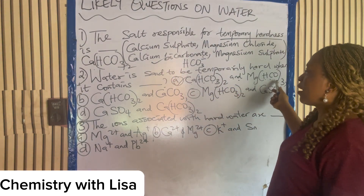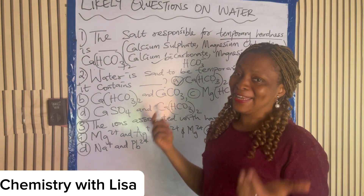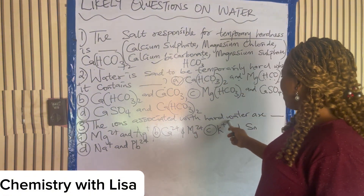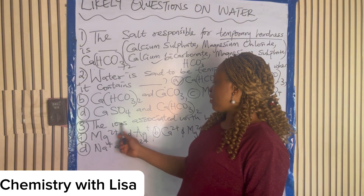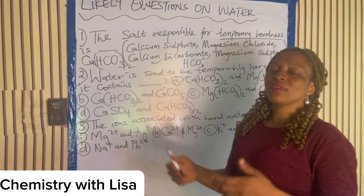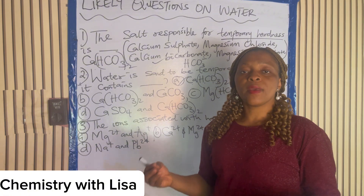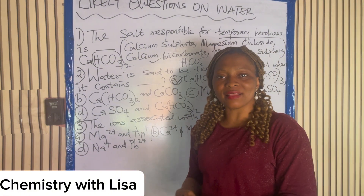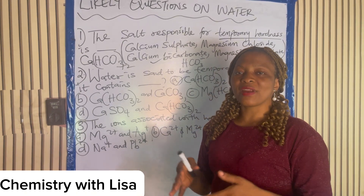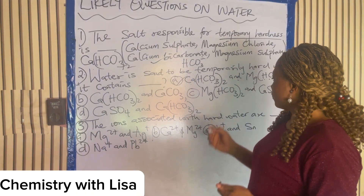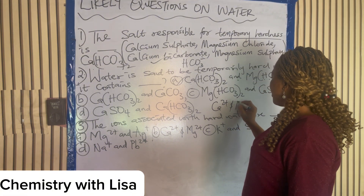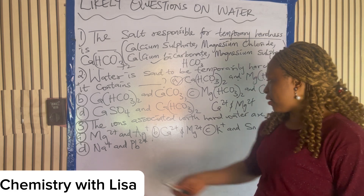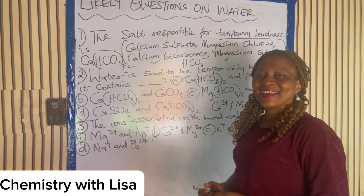Number three: the ions associated with hard water are what? What are the ions associated with hard water? When we say water is hard, we mean it cannot lather easily with soap. The ions present in that water include calcium ions and magnesium ions. So the answer is B.